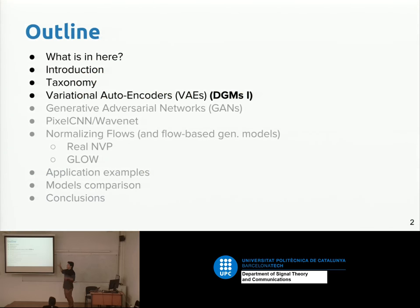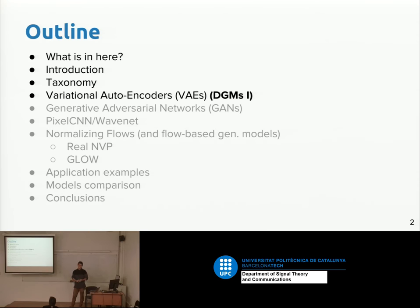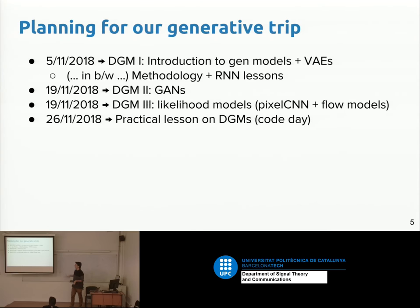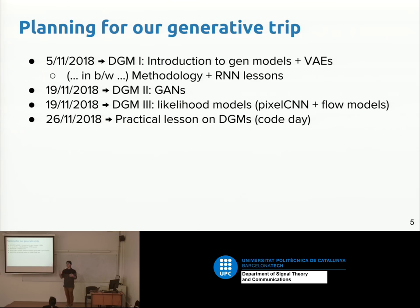I'll begin by showing you the outline: situating us on where we are, an introduction to what generative models are, a taxonomy of what types of generative models we have, and variational autoencoders as today's topic. In the course schedule, we have today's lecture on variational autoencoders, then on the 19th we will see GANs and likelihood models — three types: variational autoencoders, GANs, and likelihood models.